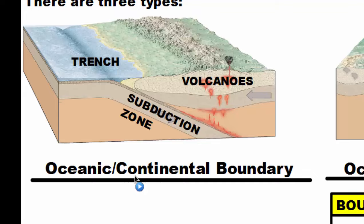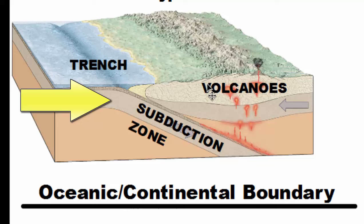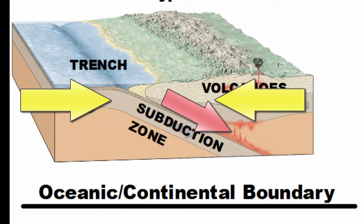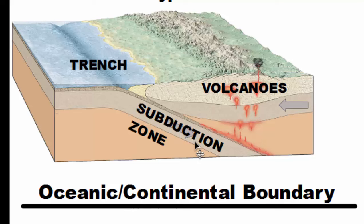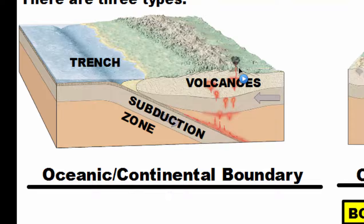During an oceanic-continental boundary, when the oceanic crust collides with the continental crust, oceanic crust has more metal in it, so it's more dense. When dense things collide with less dense things, the heavier or more dense things sink or go underneath. So the ocean floor actually sinks back down into the Earth in a process called subduction. The area where this happens is called a subduction zone. As this crust goes back down into the Earth, it gets remelted into magma, and then makes its way up through the Earth's surface and erupts out of volcanoes.